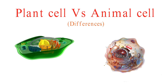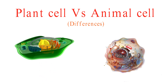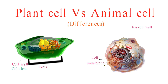Let's explore the differences that set plant and animal cells apart. Plant cells are encased in a rigid cell wall made of cellulose, providing structure and protection. Animal cells, on the other hand, lack this wall and rely on a flexible plasma membrane. In terms of shape and size, plant cells tend to be rectangular and larger, while animal cells are round or irregular and generally smaller.